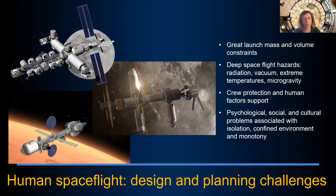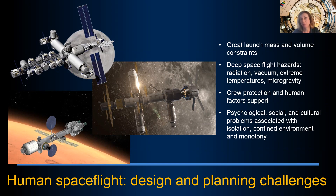Talking about human spaceflight, there are many design and planning challenges that architects, engineers, and scientists have to deal with and address to the best of our knowledge. First of all, we need to bring everything from Earth to space, and that means we have great launch mass and volume constraints. It depends on what type of launch systems we use and what capabilities we have on Earth, which limits the size of the structures we can bring to space.